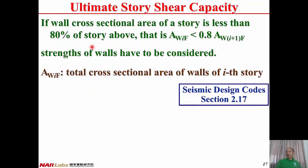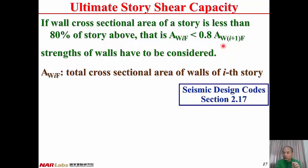If the wall cross-section area of a story AWIF is less than 80% of the story above, the strength of walls has to be considered according to Seismic Design Code section 2.17.